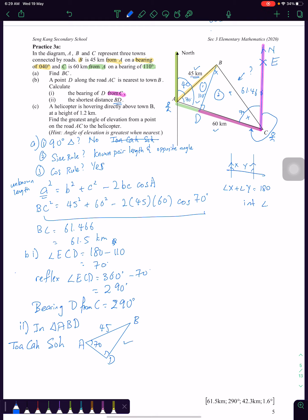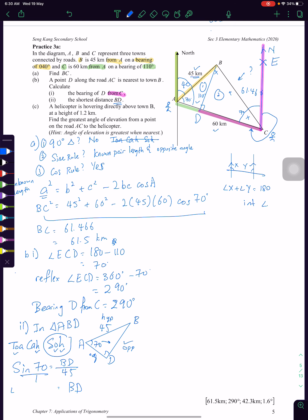So SOH-CAH-TOA. I want to find out BD. And to the angle, BD is opposite. And to the 90 degree is hypotenuse. And this is my adjacent. So I want to find opposite, I will take my O. I have hypotenuse, I will take the H. So I will use SOH. So write down. Sin 70 is equal to BD divided by 45. So do a cross-multiply. BD is equal to 45 times sin 70. And the answer is 42.286. And the answer is 42.3 kilometers.